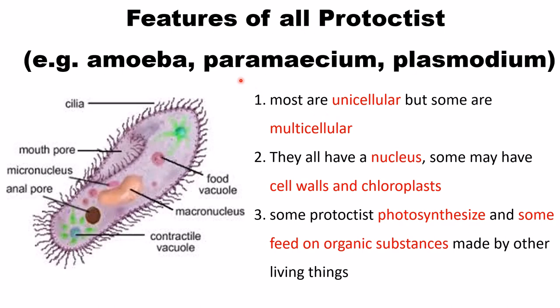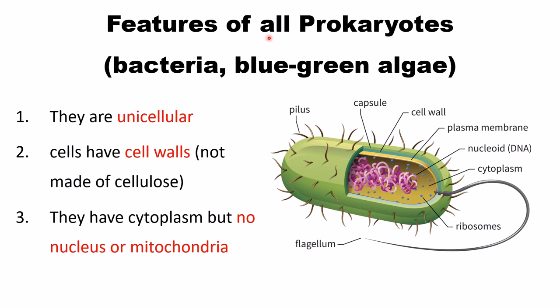The main features of protists — examples are amoeba, paramecium, and plasmodium. Most protists are unicellular but some are multicellular. They all have a nucleus; some may have cell walls and chloroplast. Some protists photosynthesize and some feed on organic substances made by other living things.